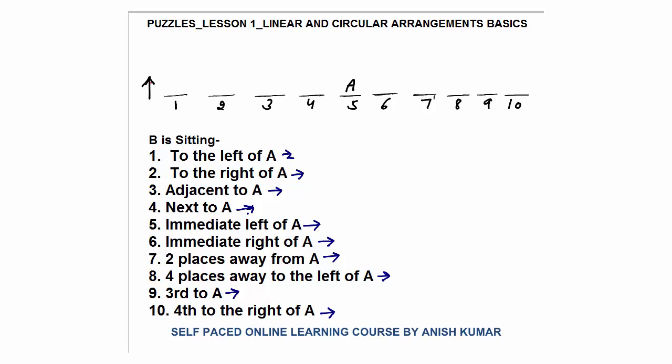Today I am going to start Puzzles Lesson 1: Linear and Circular Arrangement Basics. First, I will discuss the basics of linear arrangement. If a person is facing this direction, the left arrow indicates the left side — seat numbers four, three, two, one — and the right side would be seat numbers six, seven, eight, nine, and ten.